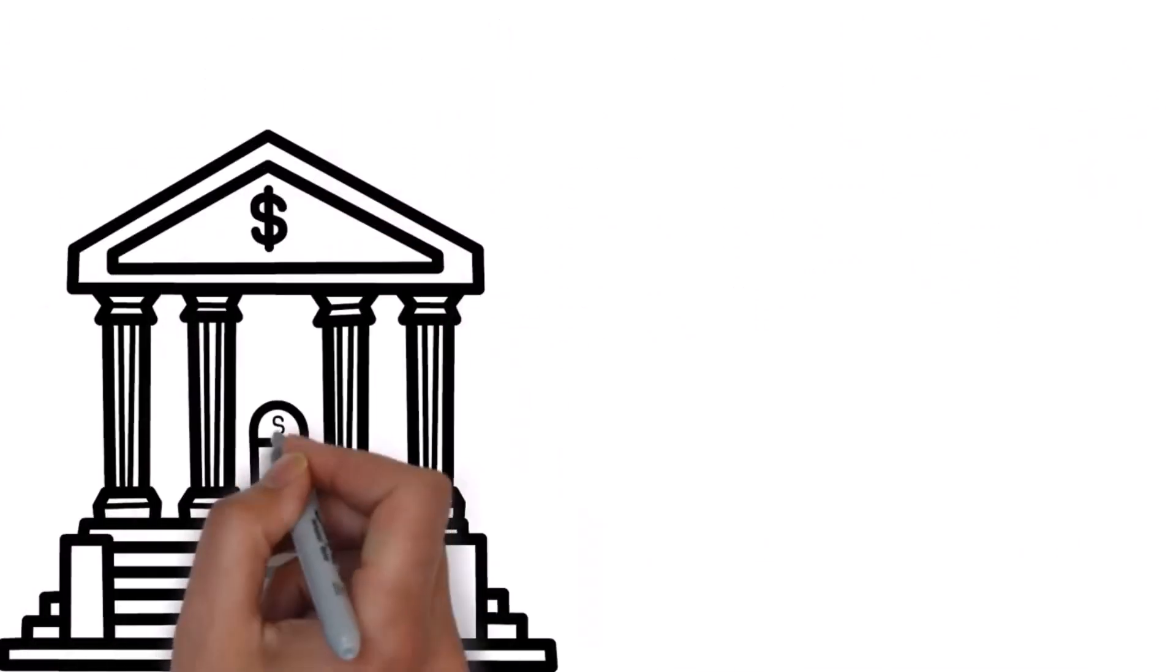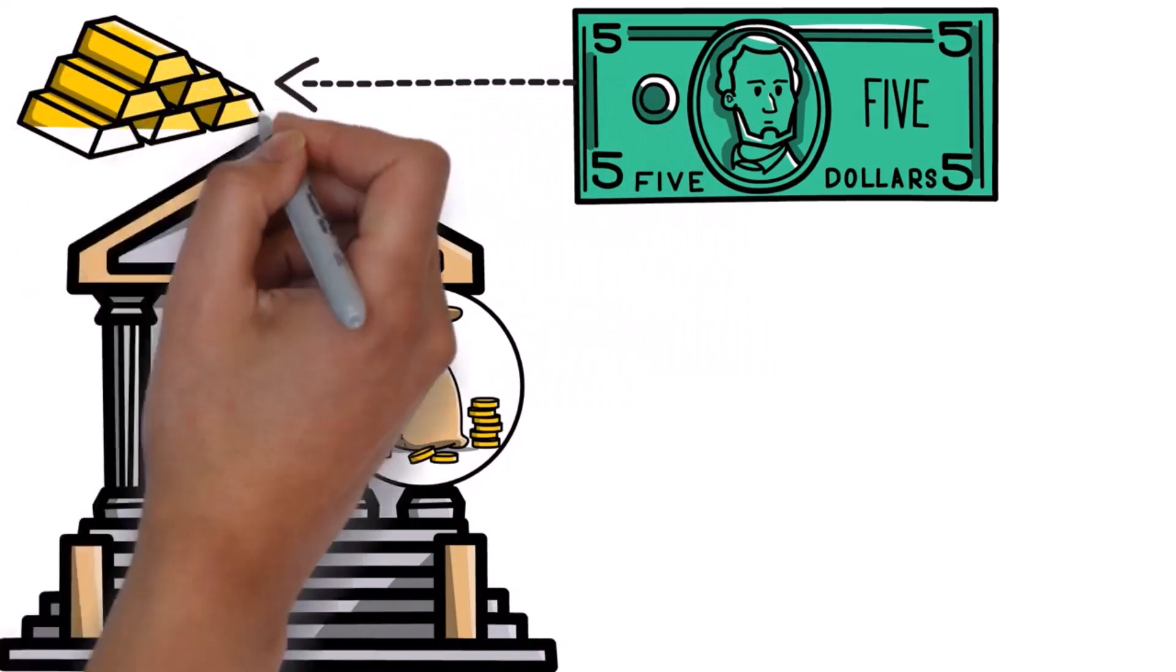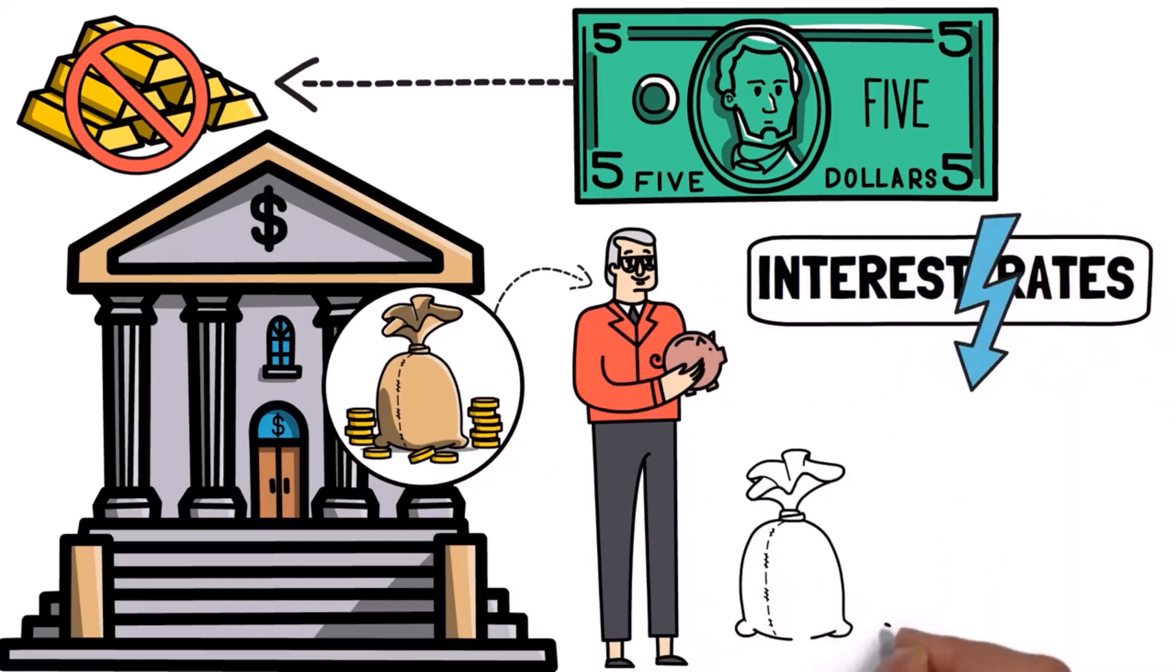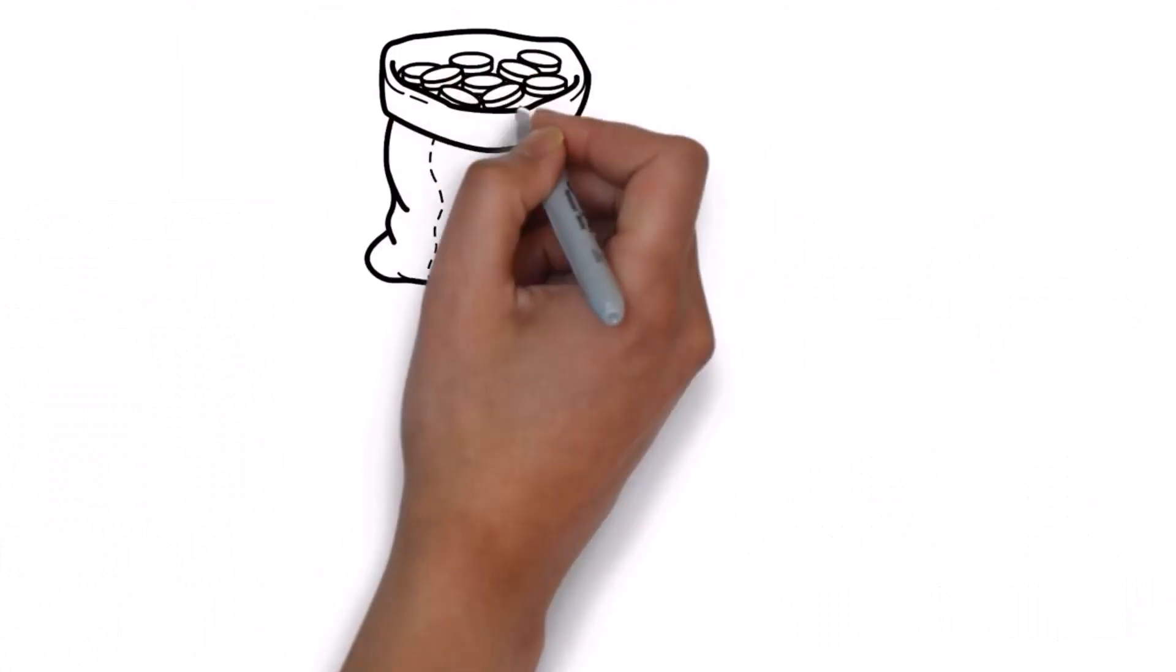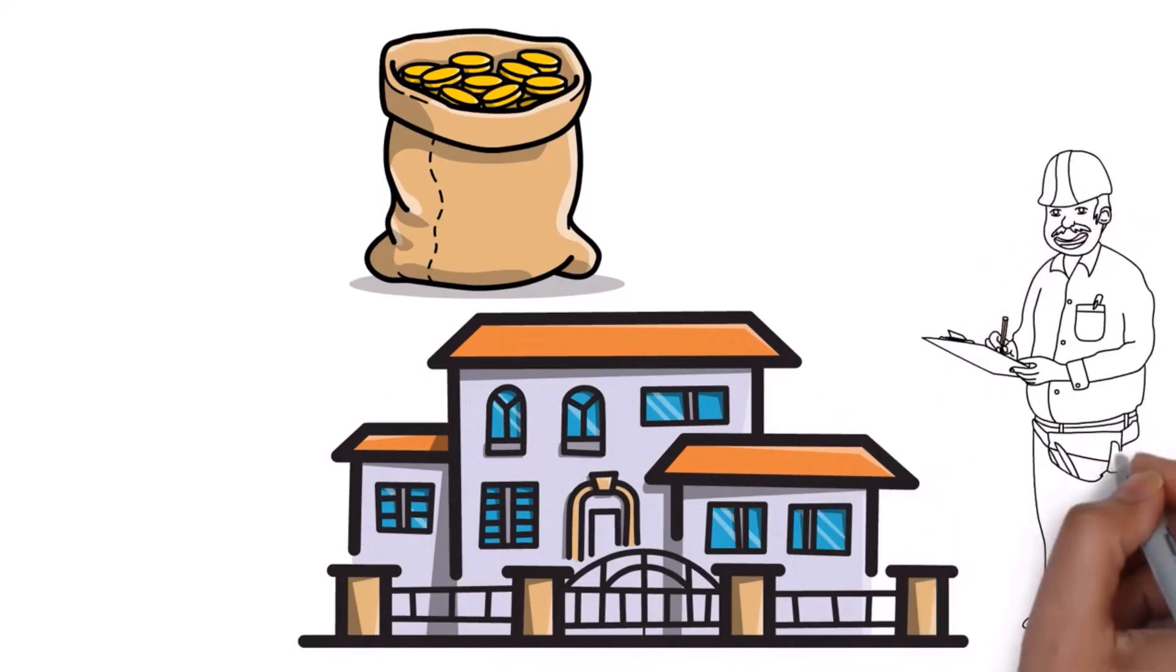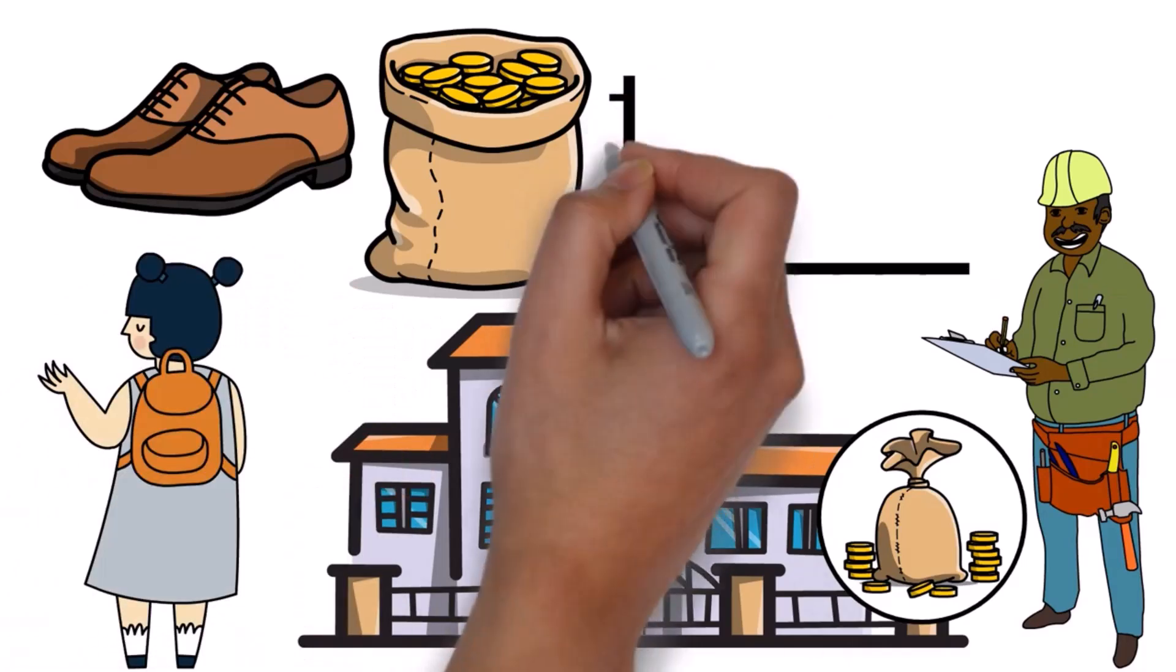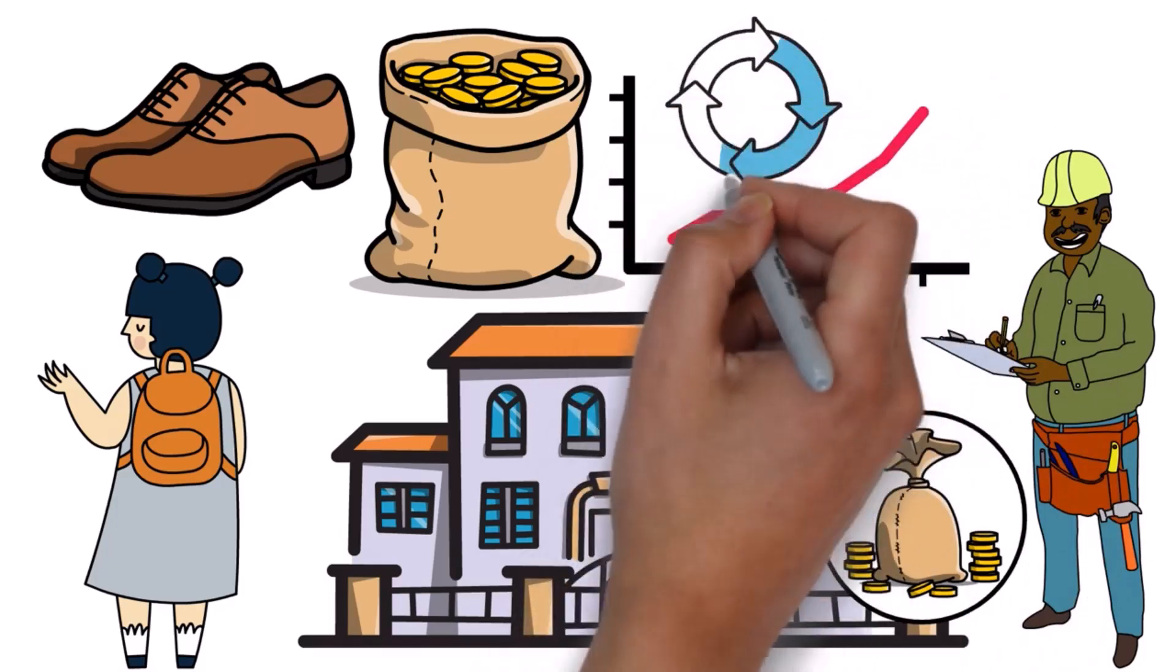But when the bank started offering loans, things changed. They began creating paper money out of thin air, not backed by the gold they held. They could lend money without giving up any of their own gold and offer lower interest rates than others in town. People started borrowing more because the interest rates were attractive. Someone might borrow money to fix their roof or build an addition to their house. This meant workers like construction workers and roof builders suddenly had more money coming in. They, in turn, spent that money on things like new shoes or bags for their spouses.